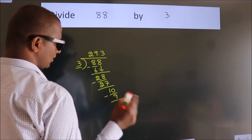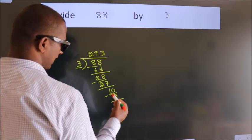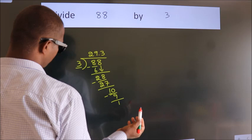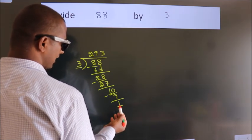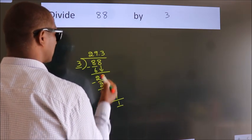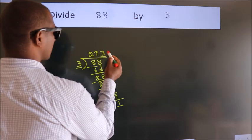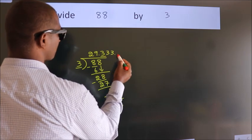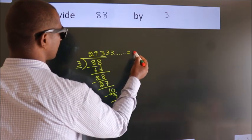Now, you observe. We had 1 here, and we got 1 again. That means this number keeps on repeating. So, this is our quotient.